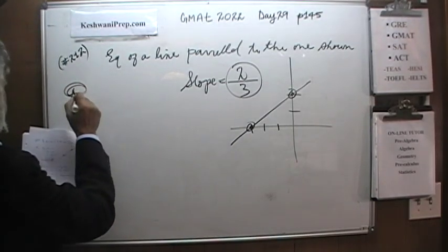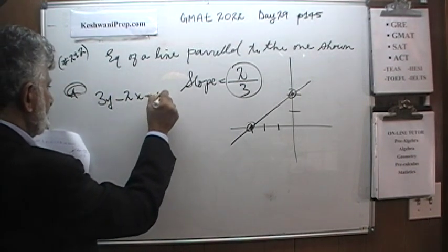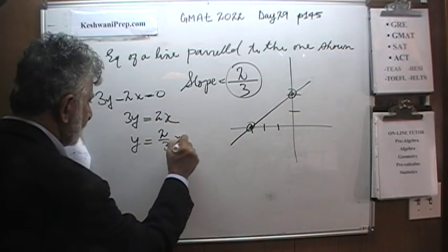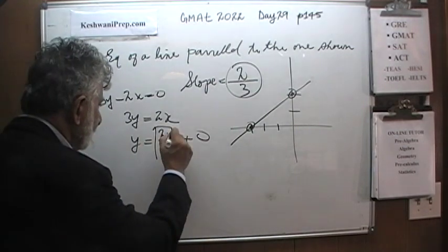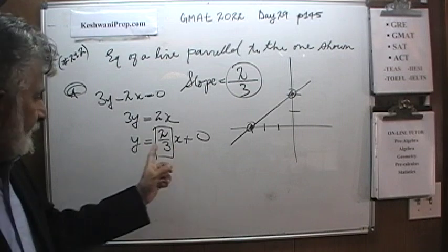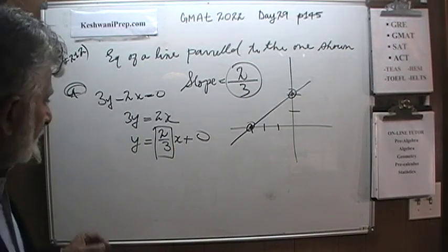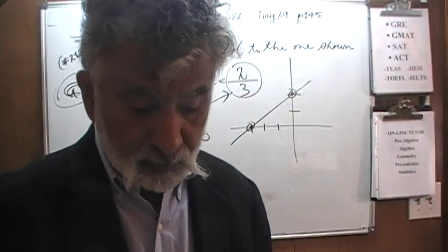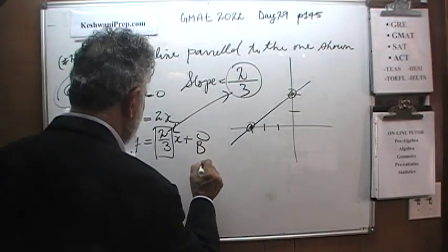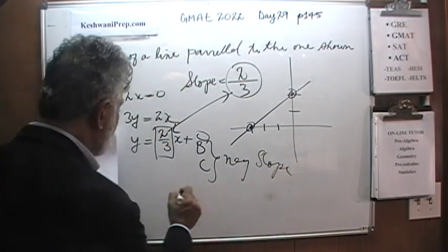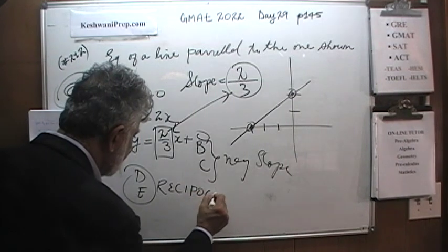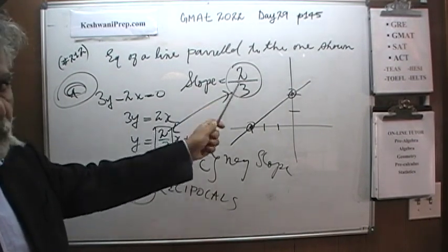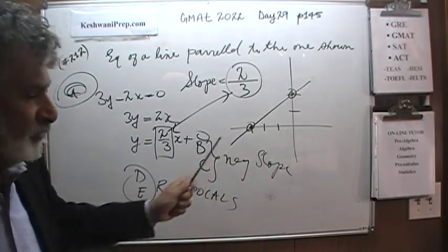Let's try answer choice A: 3y − 2x = 0. Bringing 2x to the other side gives 3y = 2x, and dividing both sides by 3 gives y = (2/3)x. It has the same slope of 2/3 — the answer is A. If you try the others, B and C have negative slopes, and D and E give a slope of 3/2 instead of 2/3. You have to pay attention.